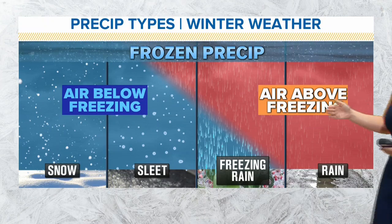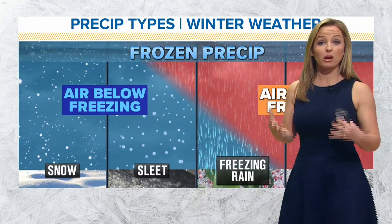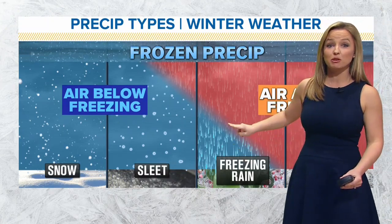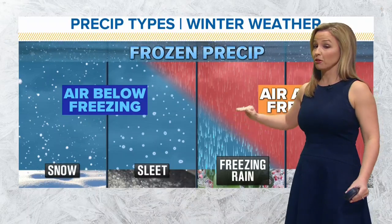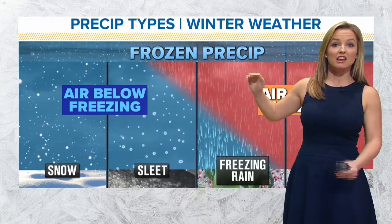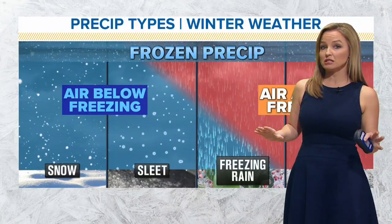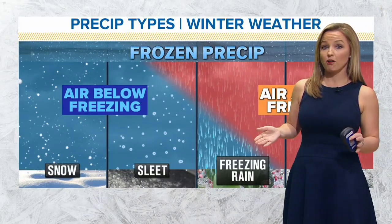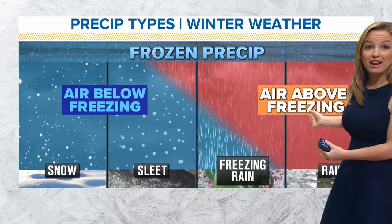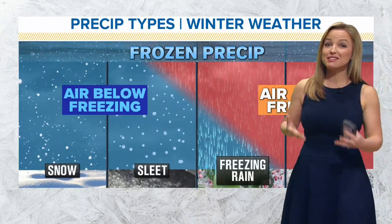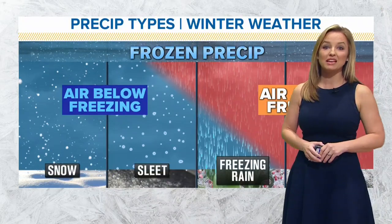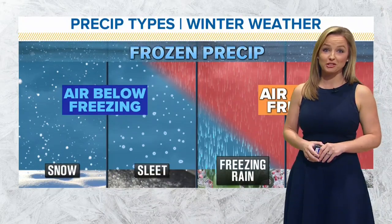So you have to look at each layer of the atmosphere when forecasting for winter weather, because any change in temperature — from 32 to 34 or 34 to 38 — changes the precipitation type from snow to freezing rain to rain. That's why sometimes you may think you're getting a snow day, and then it ends up just being sleet or freezing rain.